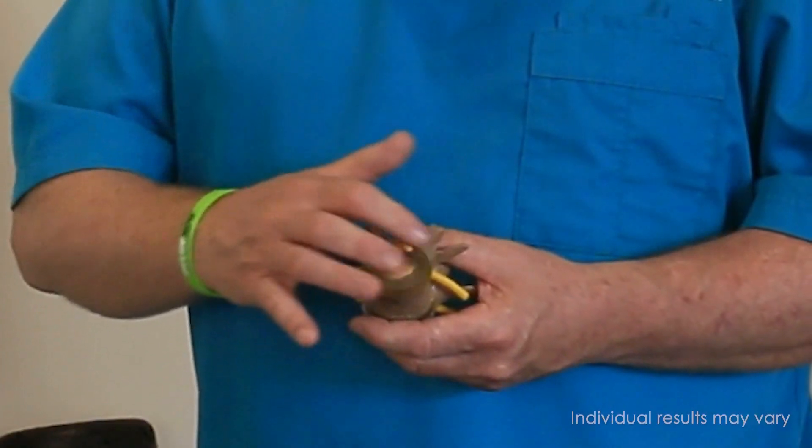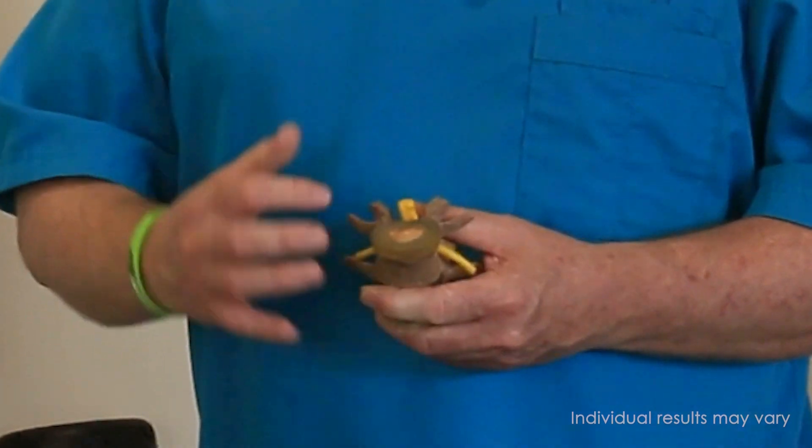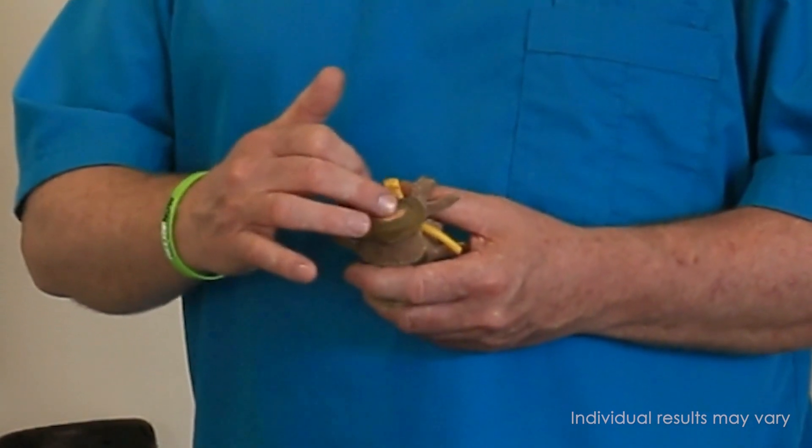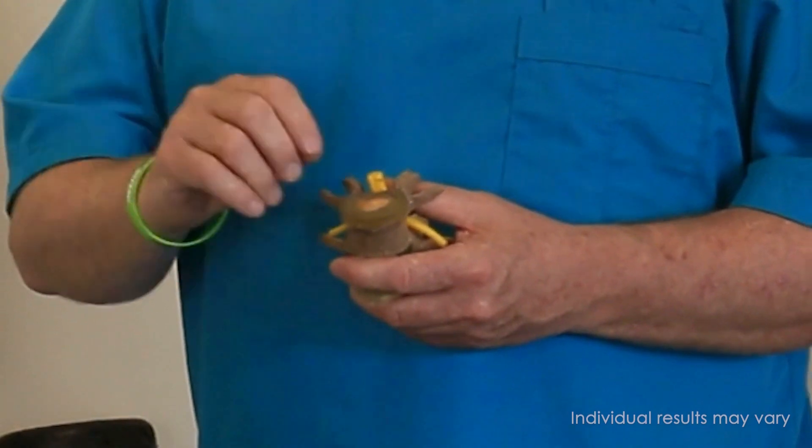A disc is like a jelly donut. As we see here, there are 18 rings of cartilage that hold in this viscous material - it's like molasses in January, very thick.